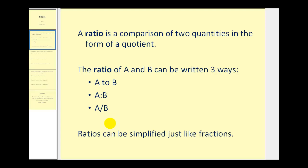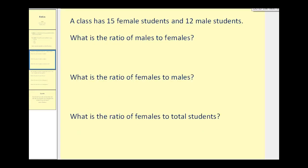Let's take a look at some examples of how we can create ratios. A class has 15 female students and 12 male students.